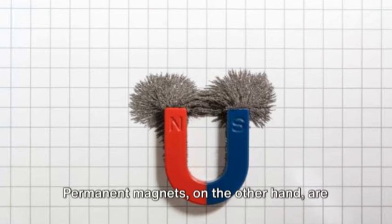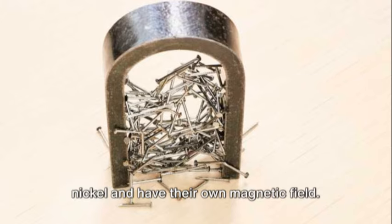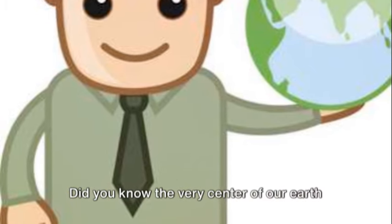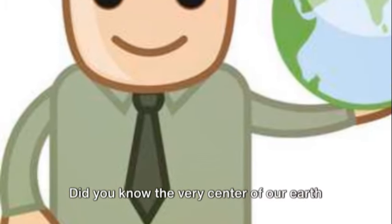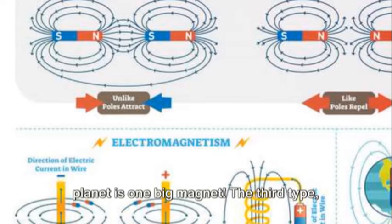Permanent magnets, on the other hand, are always magnetic. They're made of materials like iron or nickel and have their own magnetic field. Did you know the very center of our Earth is made of iron and nickel? That's why our planet is one big magnet.